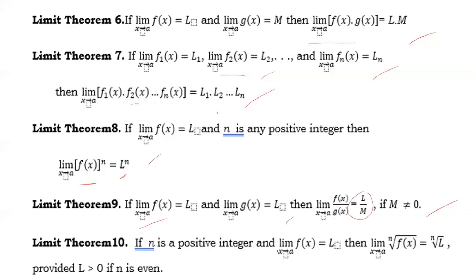Theorem ten: if n is a positive integer and the limit of f(x) as x approaches a equals L, this is the radical rule. The limit of the nth root of f(x) as x approaches a is equal to the nth root of L, provided that L must be greater than zero — there is no square root of a negative — if n is even.